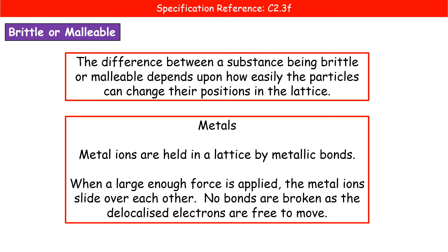We're going to take each of the main categories of substance and see what happens and why. First on the list is metals. Metal ions are held in a lattice by metallic bonds — the force of attraction between the delocalized electrons and the positive metal ions. If we apply a large enough force, those positive metal ions are able to slide over each other. Bonds are not actually breaking because the delocalized electrons can move around the structure. So the metal ions and delocalized electrons can move around each other and we can bend it — it is malleable.